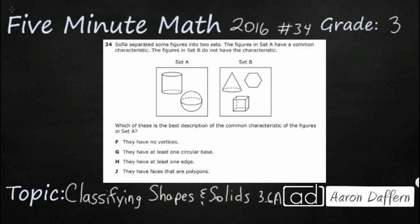So we have some figures that are in two different sets, set A and set B. We have a clue here. It says the figures in set A, and there's only two of them, have a common characteristic, and the figures in set B do not have that characteristic.